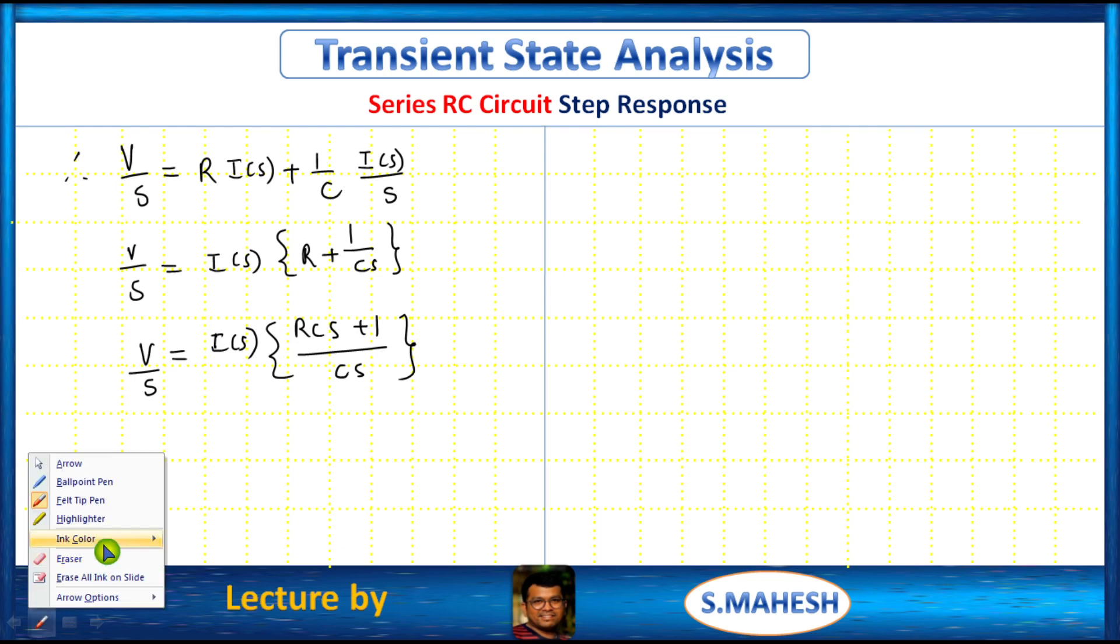So from this s gets common. So finally I of s which is equals to V C by R C of s plus 1.